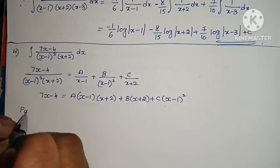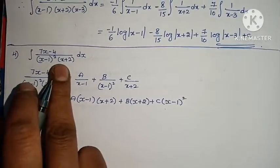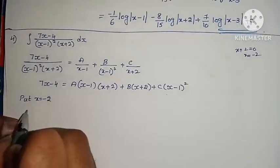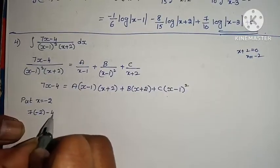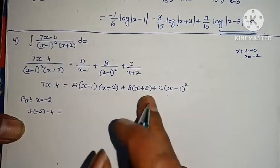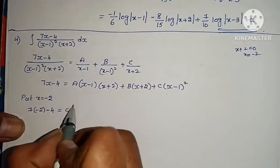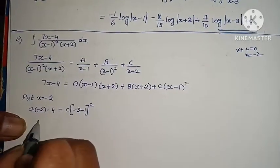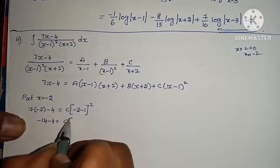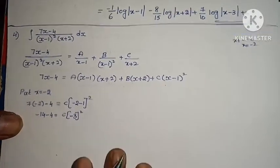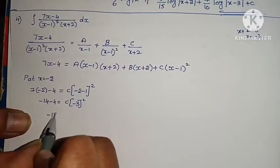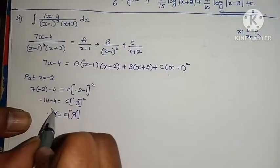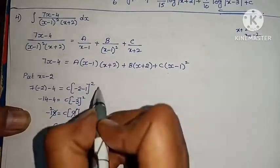Put x equals minus 2: 7(minus 2) minus 4 equals C(minus 2 minus 1) squared. Minus 14 minus 4 equals C(minus 3) squared, giving minus 18 equals 9C. So C equals minus 2. Put x equals 1: 7(1) minus 4 equals B(1 plus 2), giving 3 equals 3B. So B equals 1.